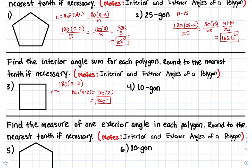For a decagon, n is equal to 10. So 180 times (10 minus 2), which is 180 times 8, and that simplifies to 1,440 degrees.